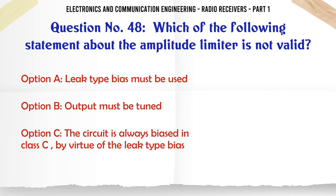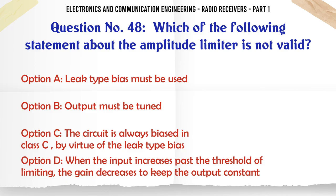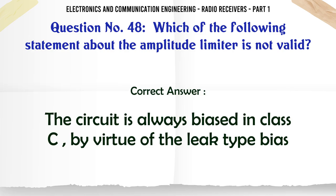Which of the following statements about the amplitude limiter is not valid? A. Leak type bias must be used. B. Output must be tuned. C. The circuit is always biased in class C by virtue of the leak type bias. D. When the input increases past the threshold of limiting, the gain decreases to keep the output constant. The correct answer is the circuit is always biased in class C by virtue of the leak type bias.